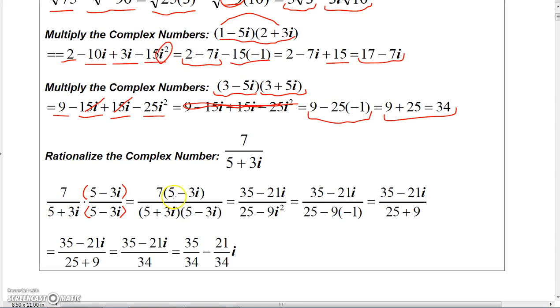So if I multiply the top by 5 - 3i, I can just distribute the 7: 7 times 5 is 35, and then 7 times -3i is -21i. Now on the bottom, I'm going to just cut to the chase here - the middle terms are going to cancel...